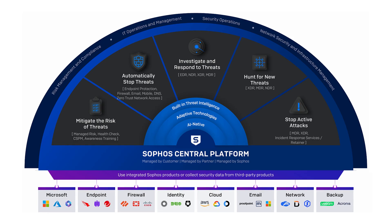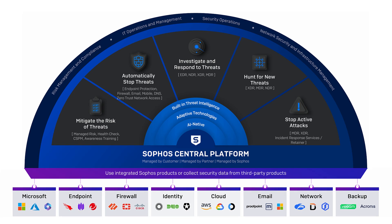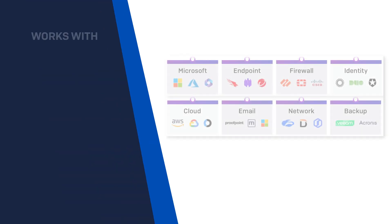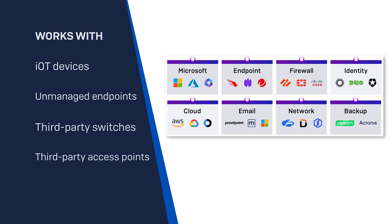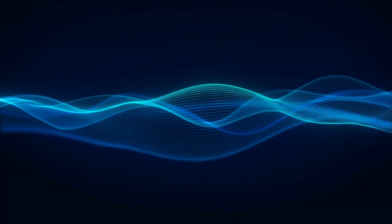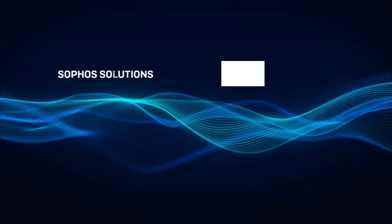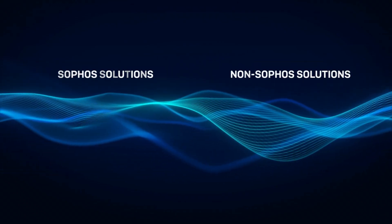Active Threat Response is equally effective across diverse IT environments. Whether you have IoT devices, unmanaged endpoints, or third-party switches, access points, and servers, Sophos can collect telemetry from all these sources and channel threat intelligence to the data lake for analysis. This means you receive the same level of threat protection regardless of your specific IT setup.